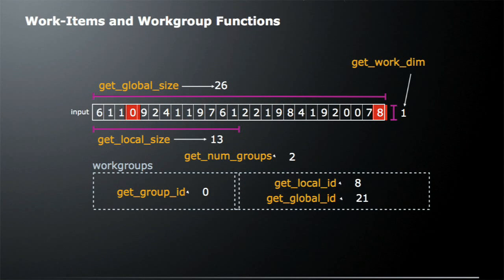Let's look at some of the work item and work group functions. One function you might be interested in is getWorkDimension, which tells you whether you're in a 1D, 2D, or 3D space. In this case we just have a one-dimensional vector, so getWorkDimension returns one. You can also call getGlobalSize — in this case it returns 26, meaning there are 26 work items in our global size.